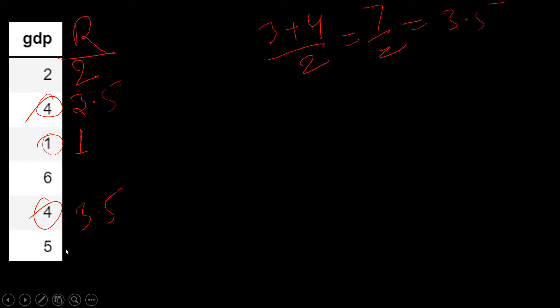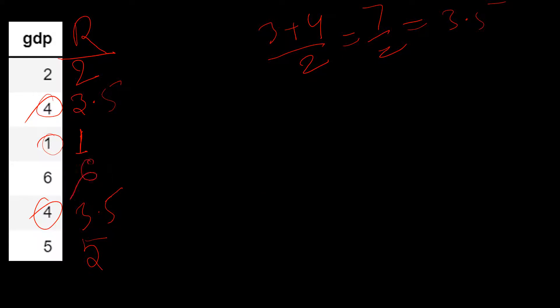Now for the next person, what ranking do we give? It is not four — we keep the counting continued. Up to the repeated values we had rank four, so the next value gets rank five. We don't stop the counting; we continue it. Wherever values are repeated, we pick their ranks, find the average, and allocate that average rank. The next rank here comes to six.